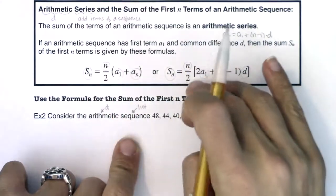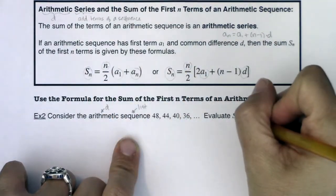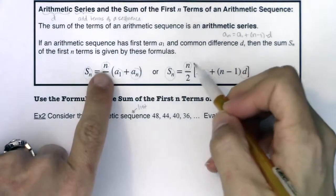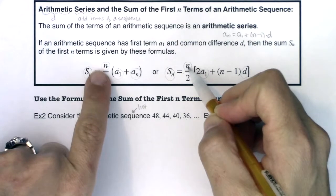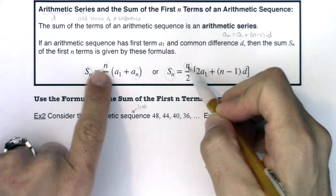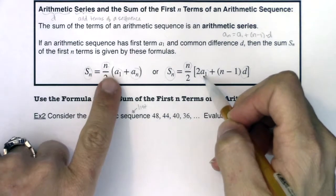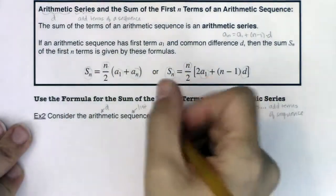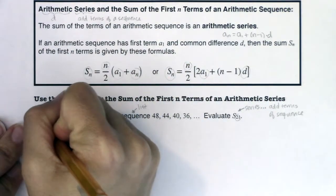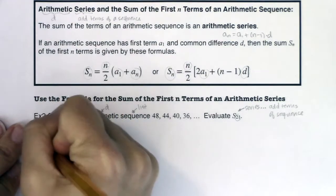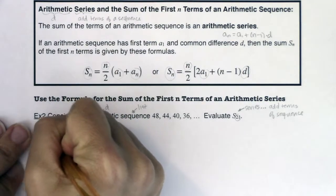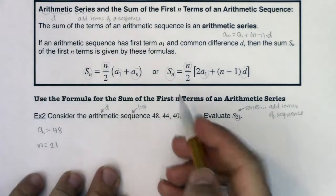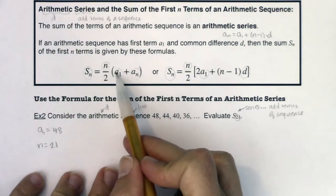So we could use either of these two, but let's see what we have, and what seems more reasonable. Like, should we use this first one? Should we use the second one? Well, I want s₂₁. So if I want s₂₁, I know n is equal to 21. Well, that's a wash because n is in both of these formulas. Let's see what else we have. I also noticed that a₁ is in both of these formulas. So a₁ I can spot, that's 48. I'm just going to keep in mind that n is 21.